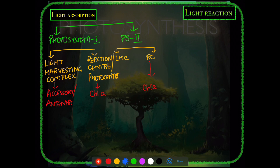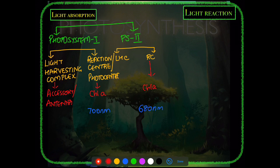The reason we have two photosystems is that their reaction centers trap light energy at different wavelengths. The chlorophyll a of PS1 absorbs at 700 nanometers, and PS2's chlorophyll a absorbs at 680 nanometers. That is why PS1 is also called P700 and PS2 is called P680.